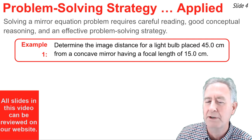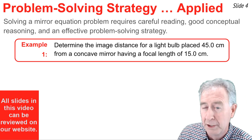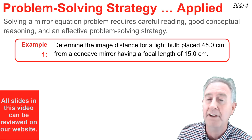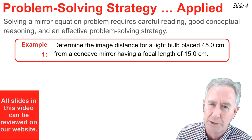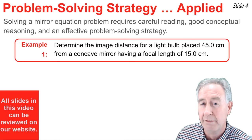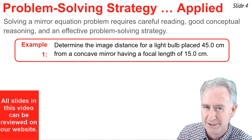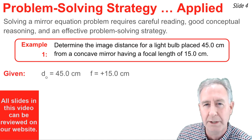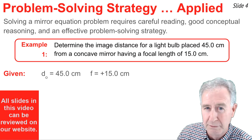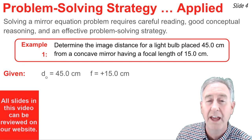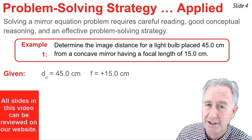The second step is to identify the given values and to express those in terms of the symbols within the equations. So I notice in the first line 45.0 centimeters, that sounds like the object distance. So I write d_o equal 45.0 centimeters. And in the second line, I read 15.0 centimeters as the focal length. So I write f equal positive 15.0 centimeters. I use the positive because it's a concave mirror.